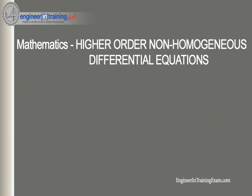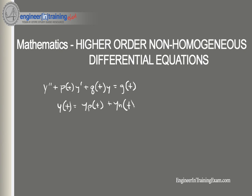Let's recall that a non-homogeneous second-order linear equation takes the form y'' + p(t)y' + q(t)y = g(t), where the general solution is y(t) = y_p(t) + y_h(t). Here y_p(t) is the particular solution of the non-homogeneous equation and y_h(t) is the general solution of the associated homogeneous equation.